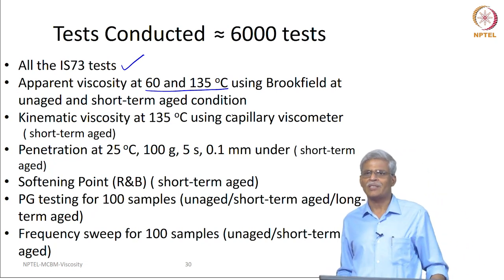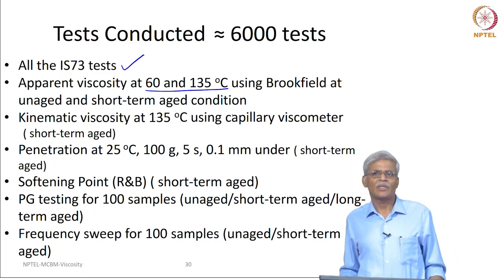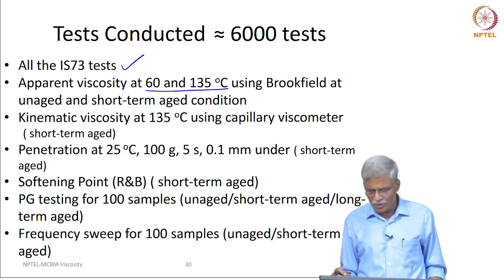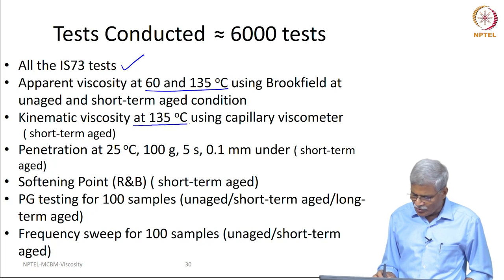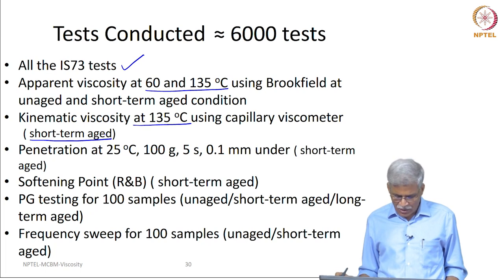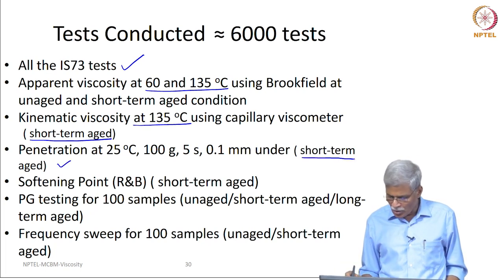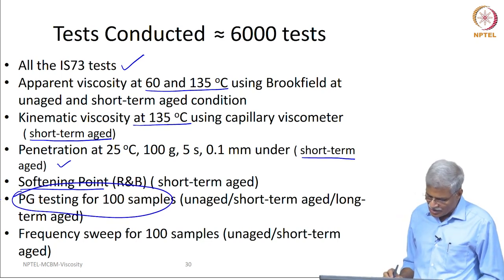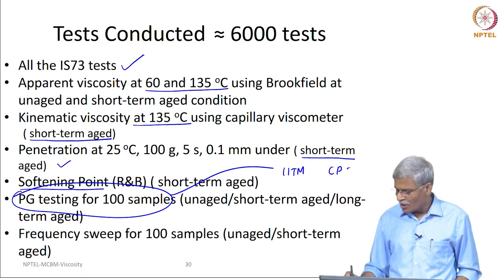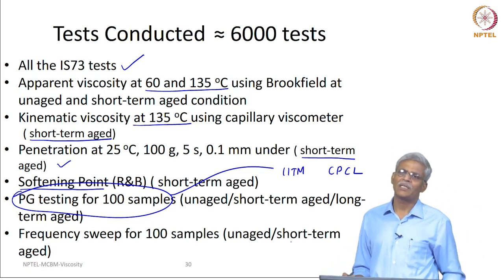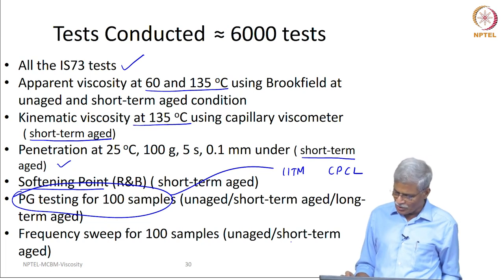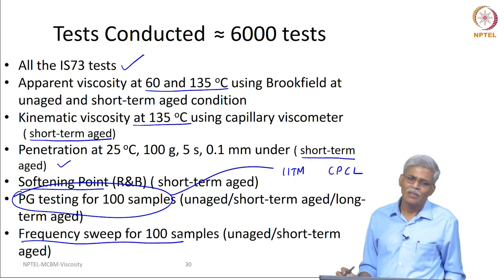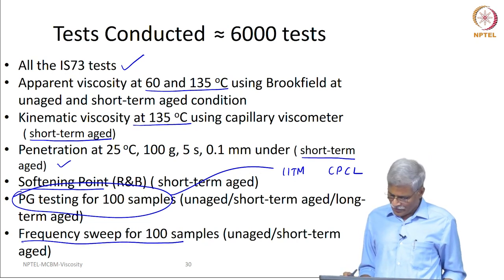The original mandate of the Bureau of Indian Standards was to try and see whether we could introduce viscosity specification using a rotational viscometer, because the actual measurement of viscosity currently stipulated is based on a vacuum capillary viscometer. We also carried out the kinematic viscosity at 135 degree centigrade in short-term aged conditions, and looked at penetration and softening point in short-term aged conditions. In addition, we did PG testing for 100 samples, carried out not only at IIT Madras but also at Chennai Petroleum Corporation Limited to check reproducibility. We also carried out frequency sweep for 100 samples in unaged and short-term aged conditions.